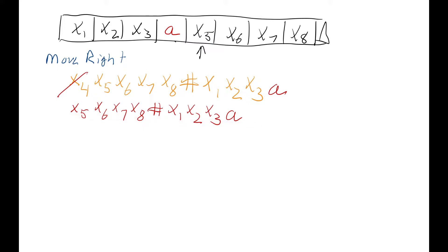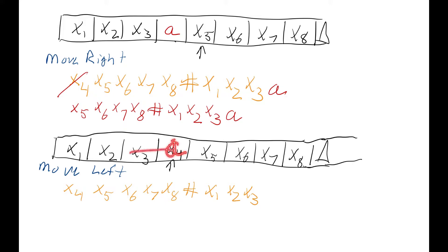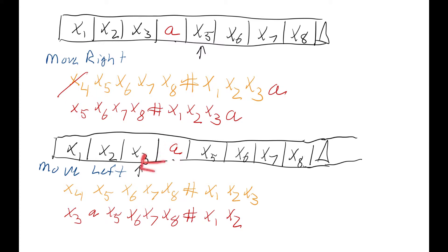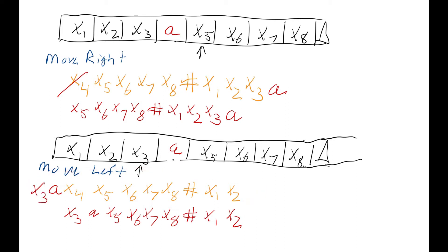The read and move left is a bit more difficult. With the tape head pointing at X4, we read it, write an A, and move the tape head left. On the POST machine store, we need X3 at the front. We use the add-to-front subroutine to add A to the front, then use shift-right-cyclically to bring X3 from the back to the front. And that's how we move the tape head to the left.